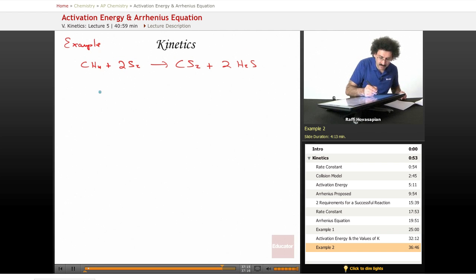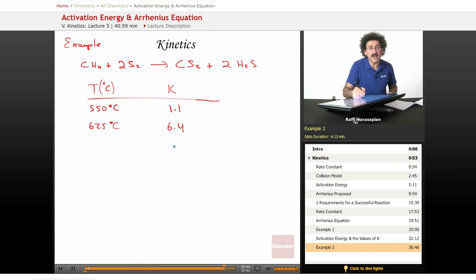Now we take a couple of measurements, temperature in degrees Celsius, and we calculated some rate constants for that. We did it at 550 degrees Celsius and we also did it at 625 degrees Celsius. We got 1.1 and we got 6.4, makes sense. Higher rate constant, faster rate, higher temperature, faster rate, so everything is good.